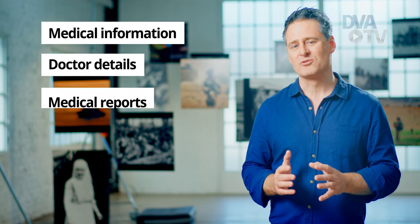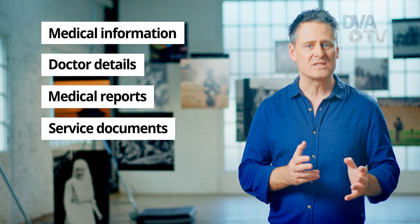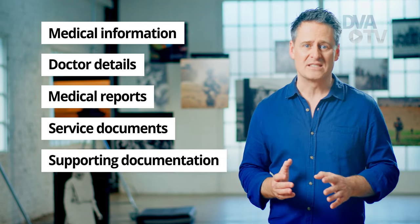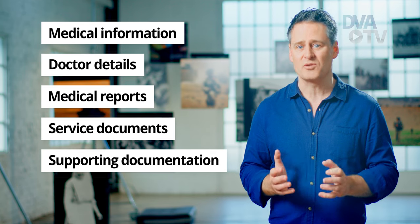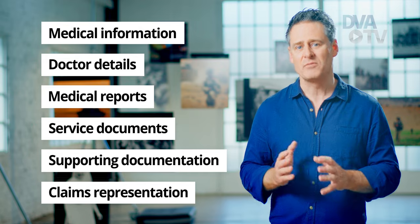For example, in this video we're going to show you how to make an initial liability claim. When completing the initial liability claim, documents you may need include information about your medical condition or conditions, your doctor's details, any medical reports from your doctor, information about your service relevant to the onset of the condition you are claiming, supporting documentation like incident reports or training programs, and claims representation details if applicable to you.